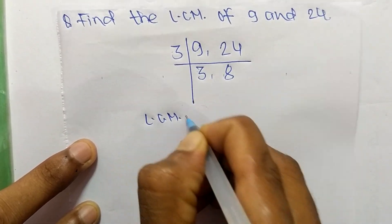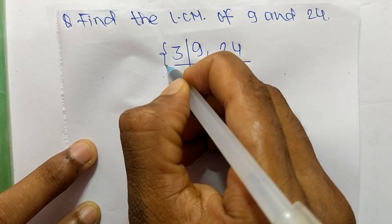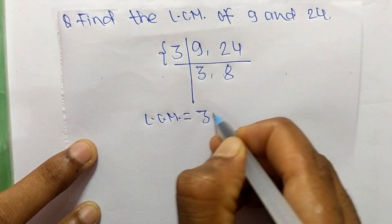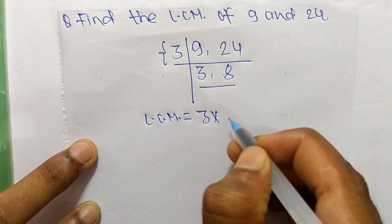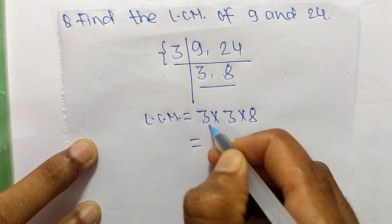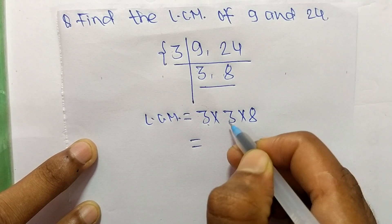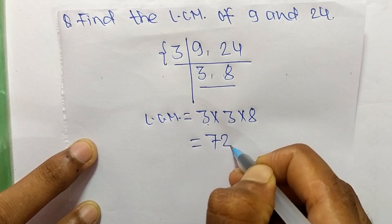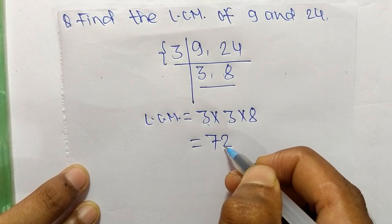So we have to now take the LCM. The LCM is equal to, from this part it is 3, and from this part it is 3 times 8. So it is 3 times 3 means 9, and 9 times 8 means 72. So 72 is the LCM of 9 and 24.